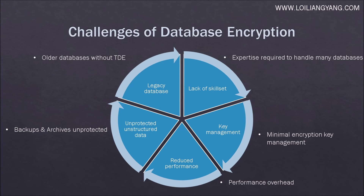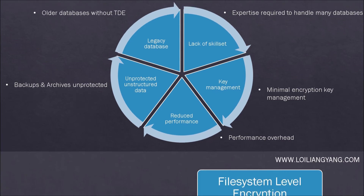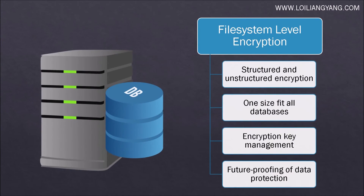Looking at the many challenges faced by security systems in database servers, we need to look elsewhere. File system level encryption, often called file or folder encryption, is a form of disk encryption where individual files or directories are encrypted by the file system itself. This is in contrast to full disk encryption where the entire partition or disk in which the file system resides is encrypted.